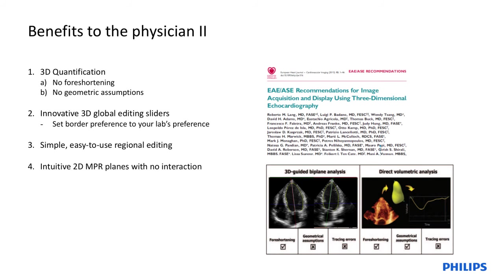The benefits to the physician, tying all pieces together: this is an EACVI guideline on 3D echo, and you can see the two nemeses of 2D echo — foreshortening and geometric assumptions. The benefits of 3D quantification are no foreshortening and no geometric assumptions — and it's fast and easy. This is the holy grail.